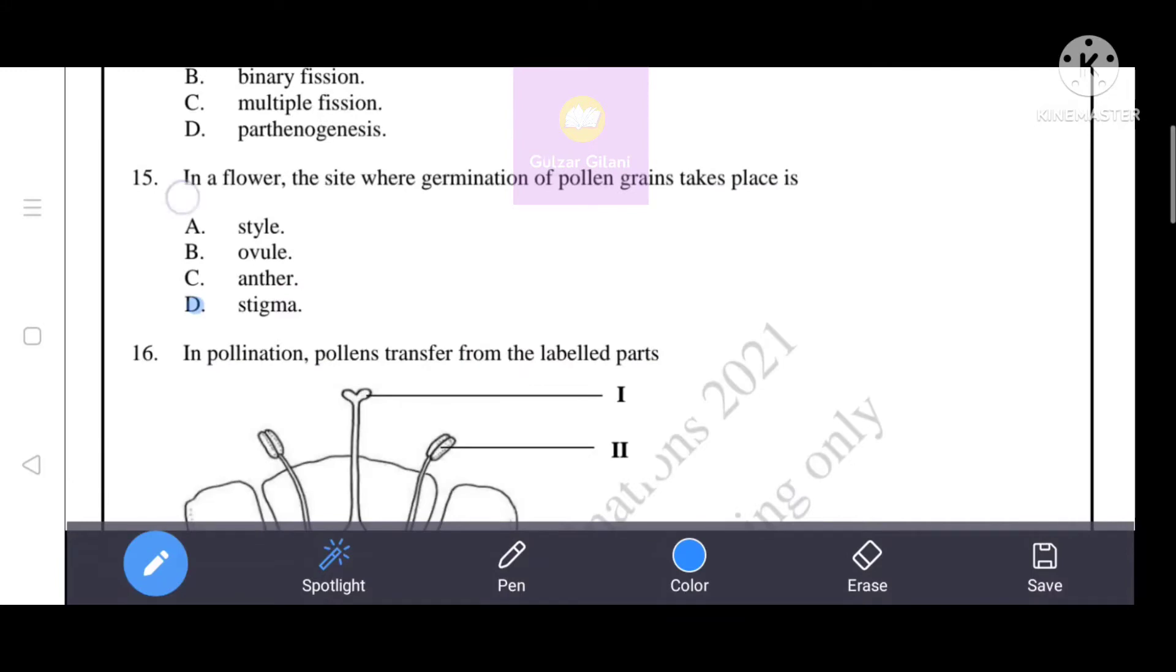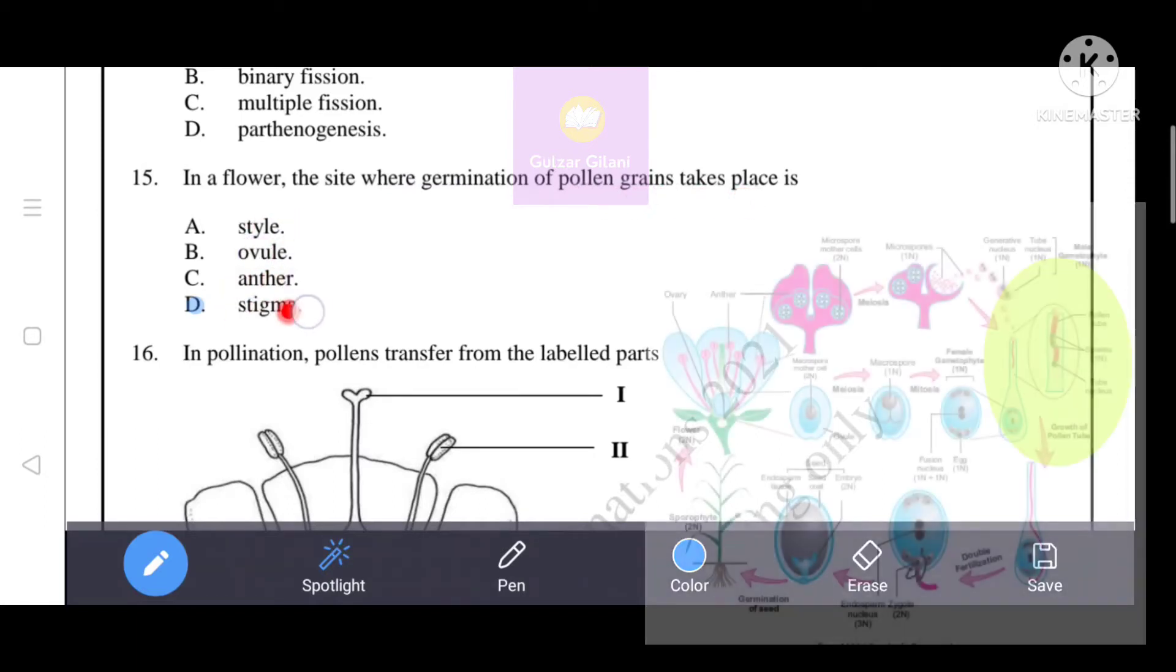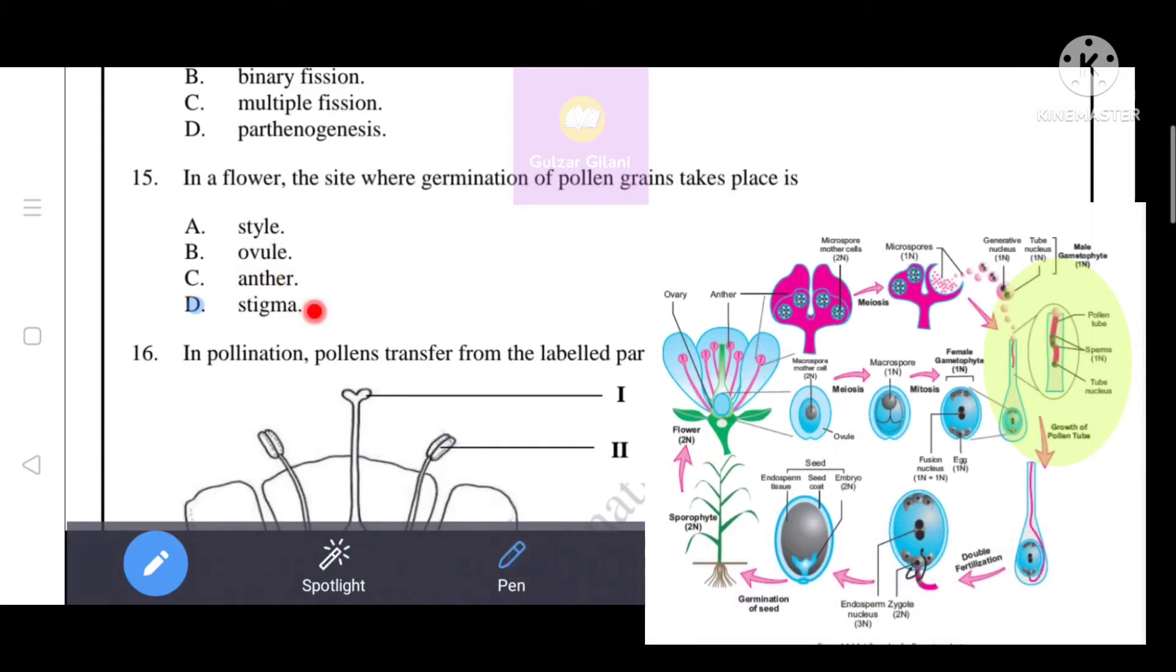Next question. In a flower, the site where germination of pollen grains takes place is - given options, the correct answer is option D, that is stigma.